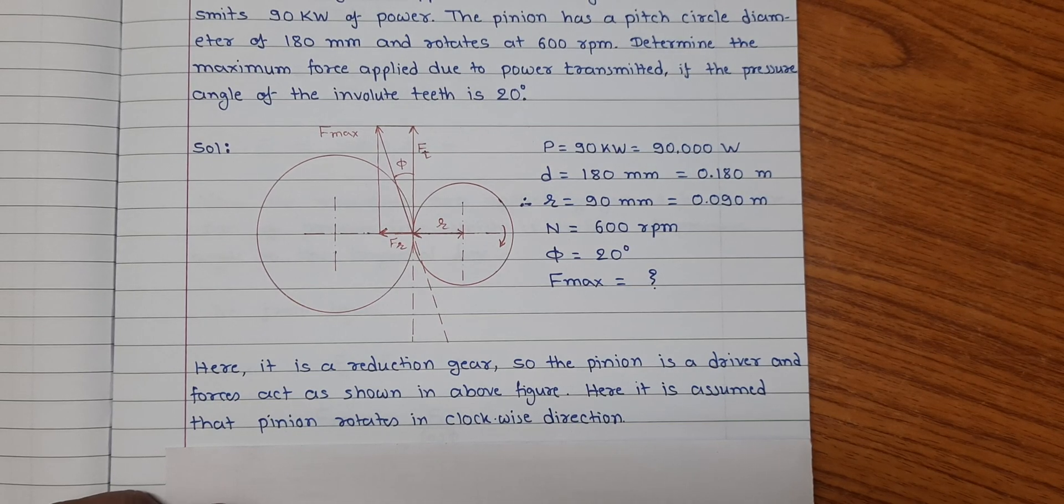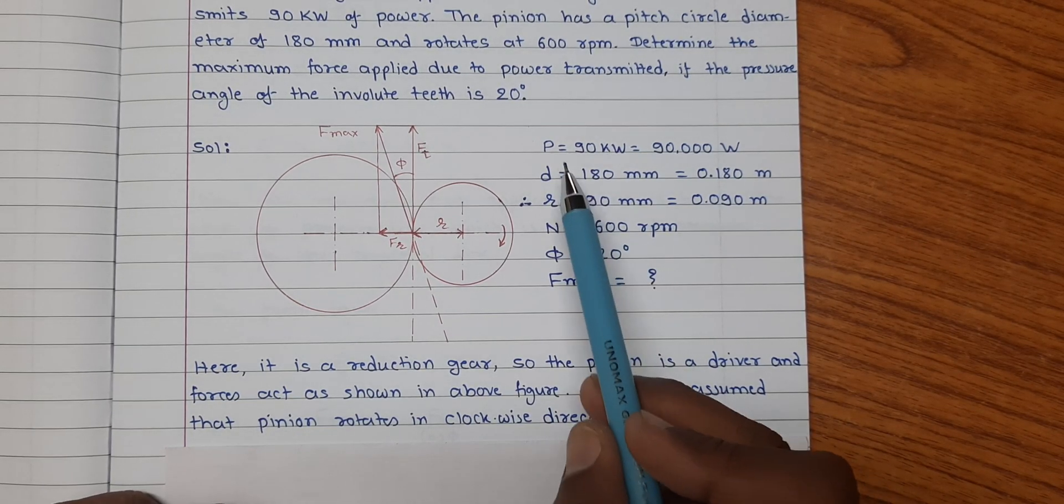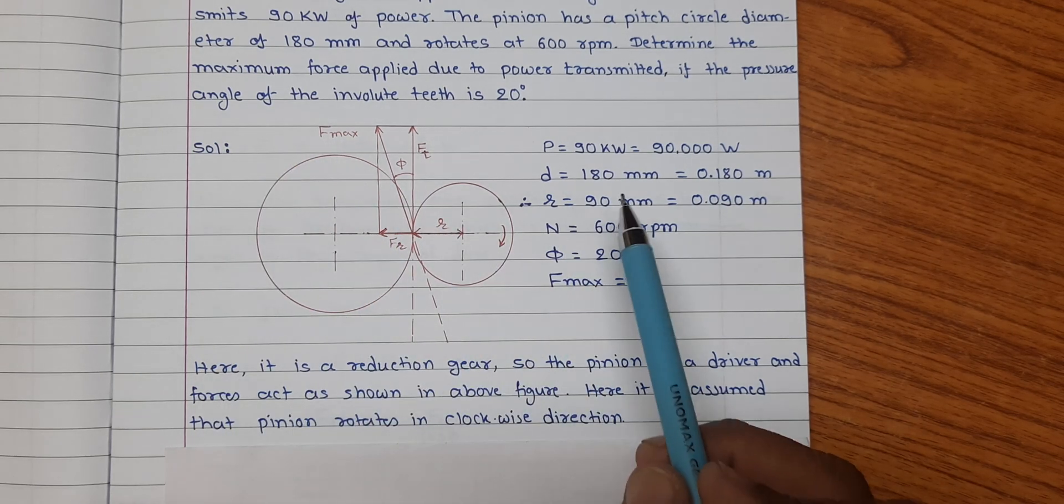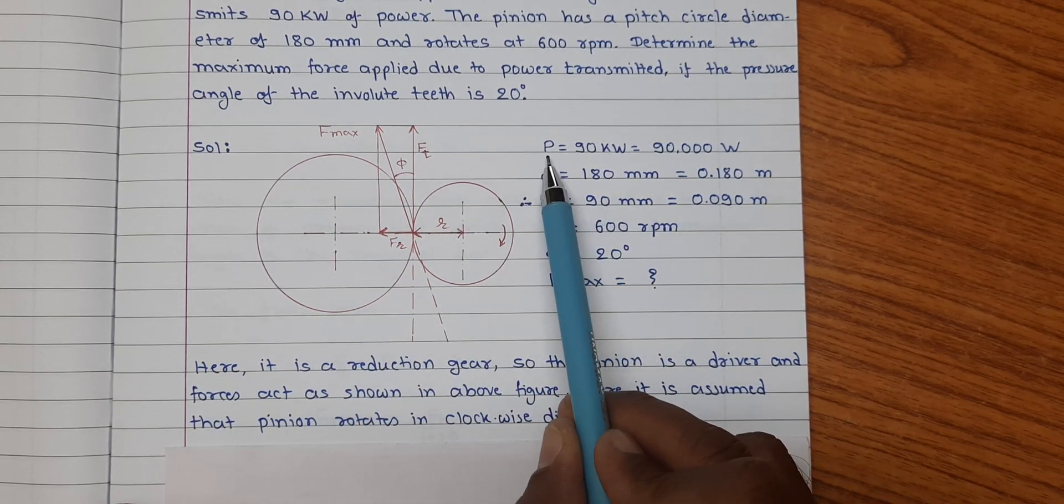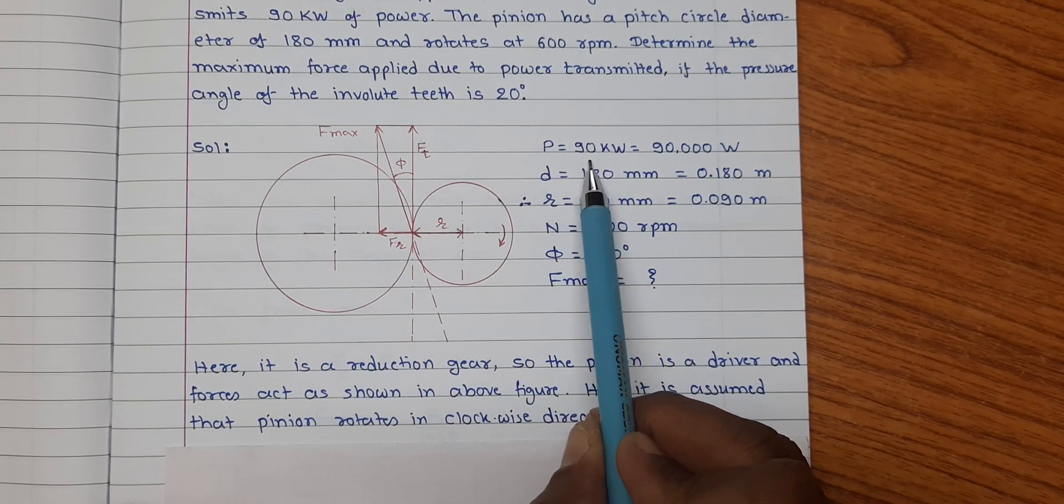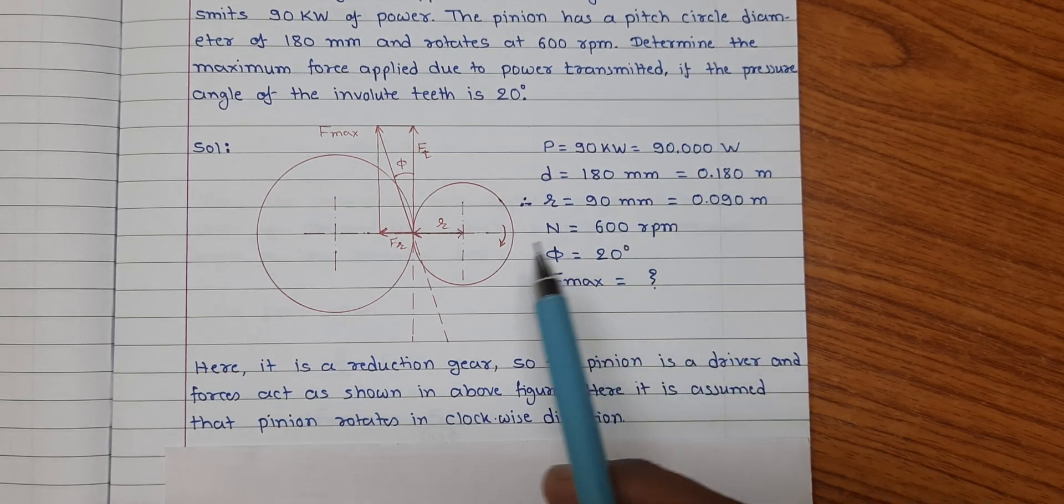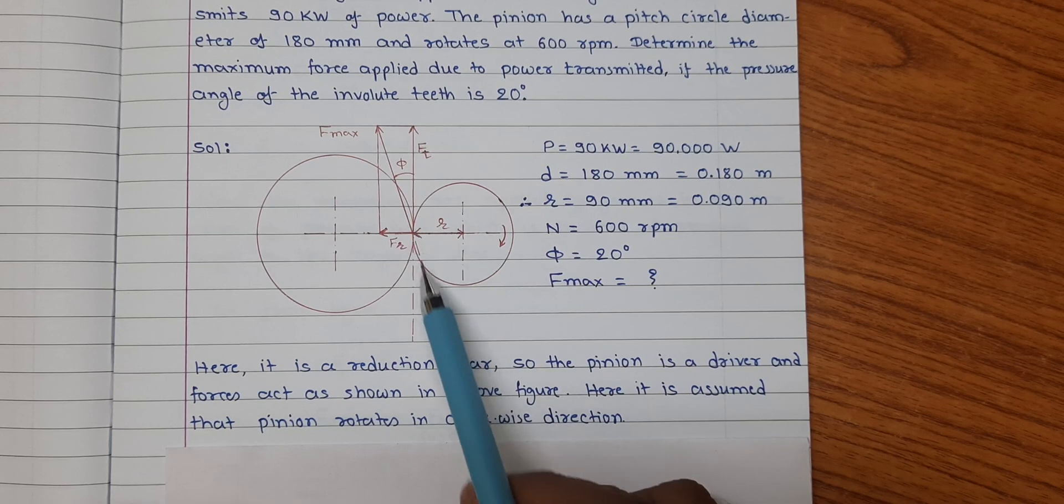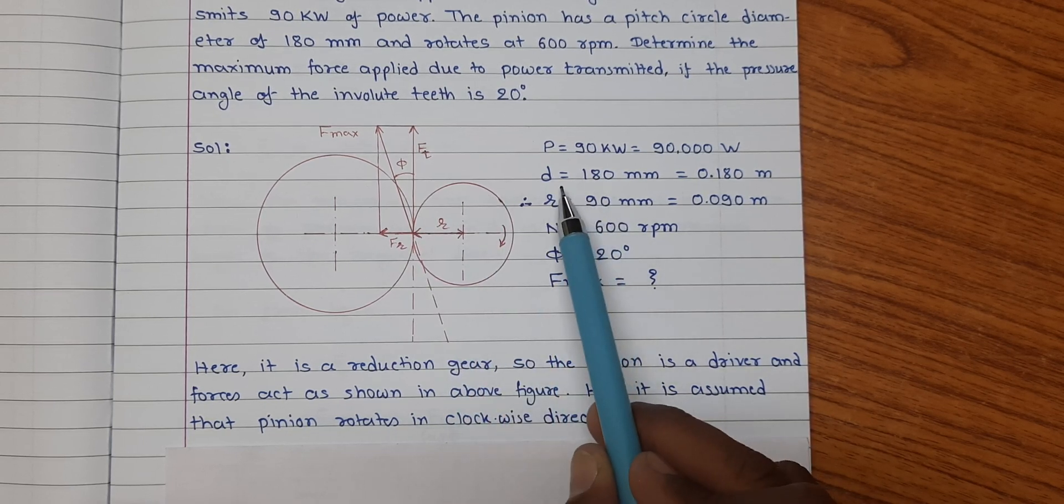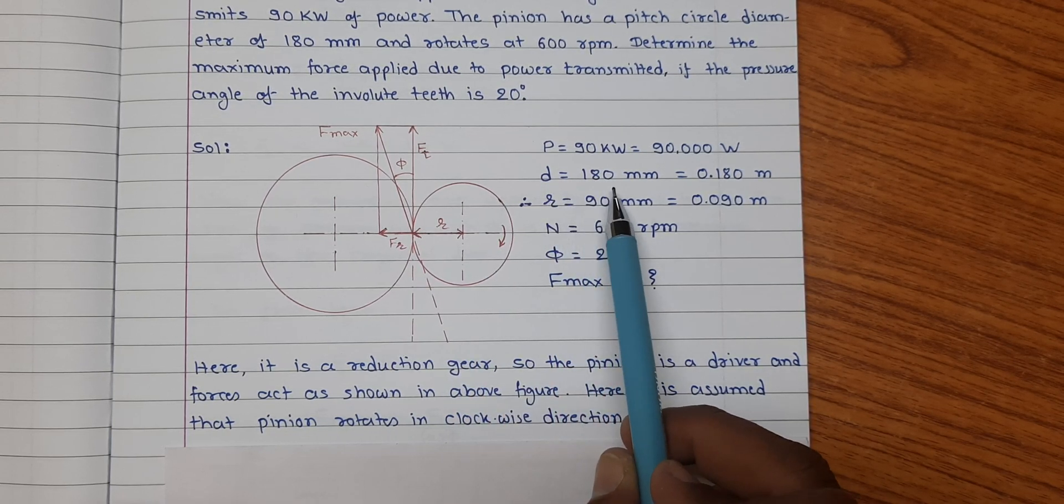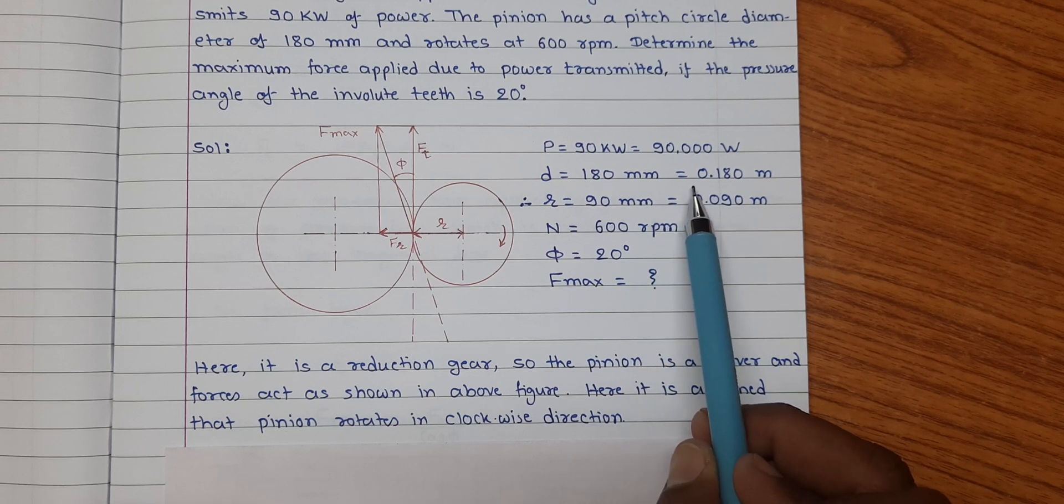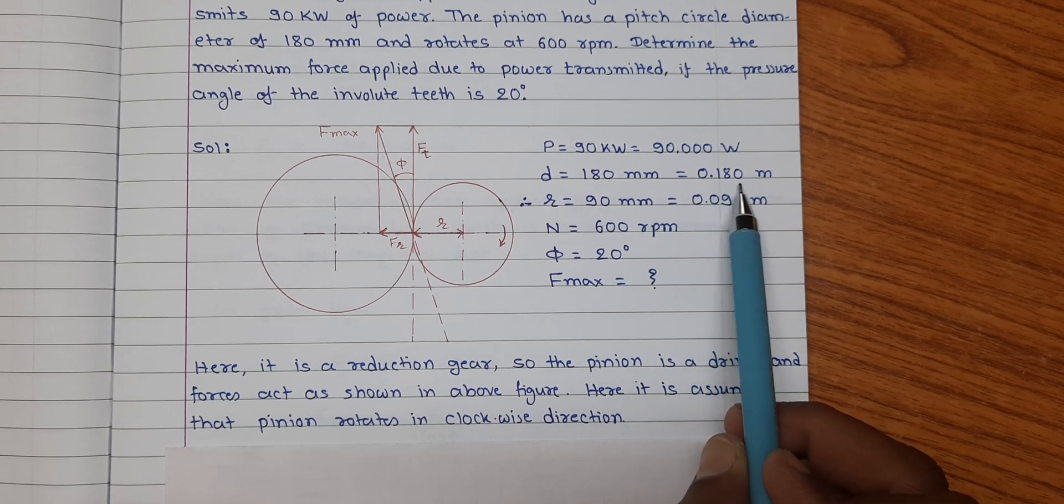Now let us note down the data here. Power transmitted P is equal to 90 kilowatts, that is 90,000 watt. The diameter of this pinion is given as small d is equal to 180 mm, so is equal to 0.180 meter.